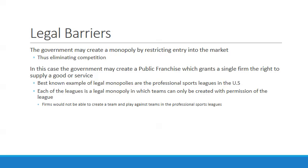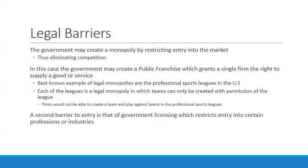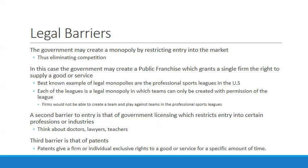A second legal barrier is government licensing, which restricts entry into certain professions or industries — doctors, lawyers, and teachers all require licenses to practice, limiting who can enter the field. A third legal barrier is patents. When the government grants a patent, it gives legal control over a product for a certain number of years — usually around 10 years. You see this in technology and medicine, where a new drug will have a patent and only that company can produce it. Once the patent expires, generics are developed.